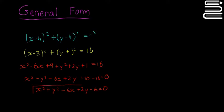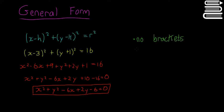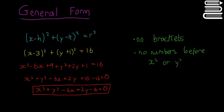That's called having the circle in the general form. The general form means there are no brackets, no numbers before x squared or y squared. So it has to be just x squared, just y squared — no 2x squared, no 2y squared, et cetera.